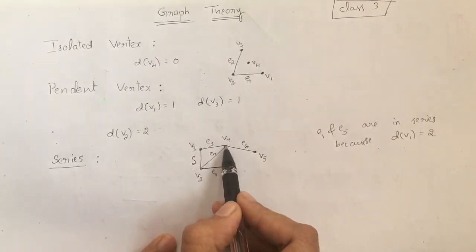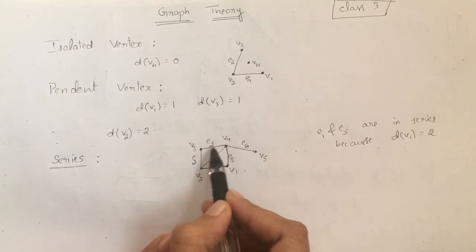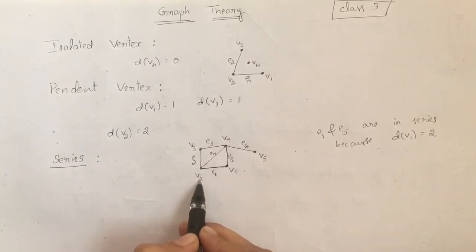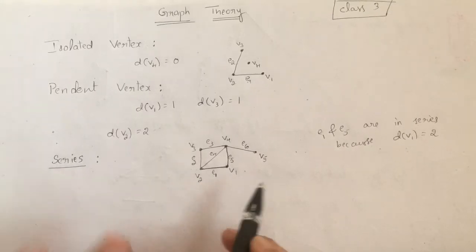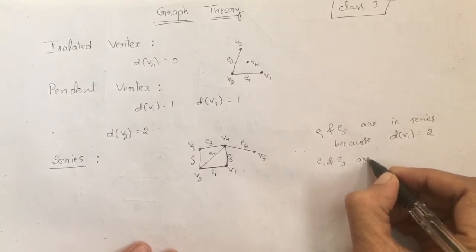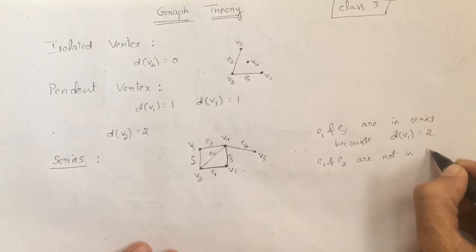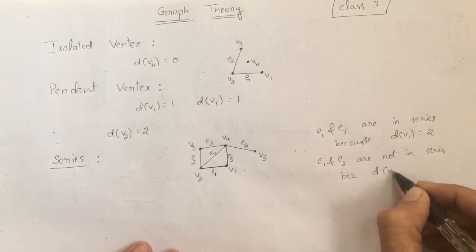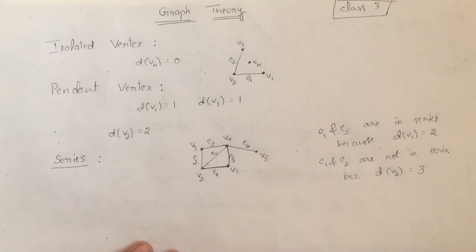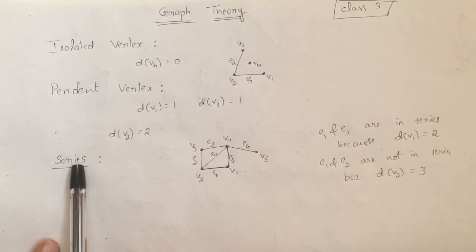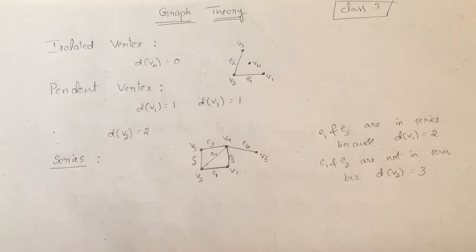I cannot say e3 and e6 are in series because their common vertex is of degree 4. Also, e1 and e2 are not in series because their common vertex v2 is of degree 3. Remember: two adjacent edges are said to be in series only if their common vertex is of degree 2.